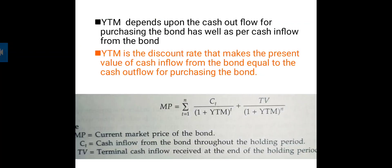Yield to maturity is the discount rate that makes the present value of cash inflows from the bond equal to the cash outflow for purchasing the bond. It is the rate or discount rate at which the present value of cash inflows equals the cash outflow for purchasing the bond.